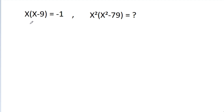In this video, we have given that x times (x minus 9) is equal to minus 1. Then we have to find the value of x squared times (x squared minus 79).